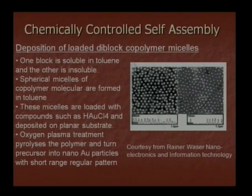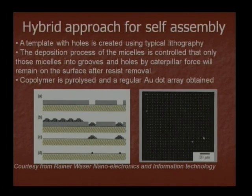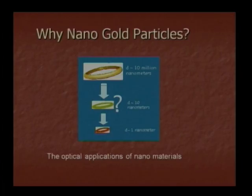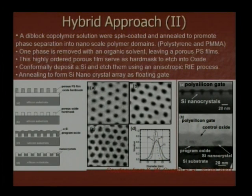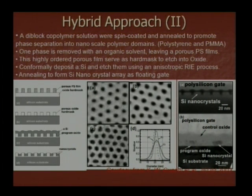Chemical control, physical control, and special techniques are useful. This is chemical-controlled self-assembly: the deposition of loaded D-block coupled with micelles. A hybrid approach is also possible. Hybrid approach 2: a dye-block co-polymer solution where spin-coating and NL2 promote phase separation into nanoscale polymer domains known as PMMA. One phase is removed with an organic solvent leaving a porous polymer film. Highly ordered porous films then serve as a hard mask to etch into oxide.